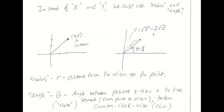Instead of XY, I can give you r-theta pairs. R is radius — the distance from the origin to the point in question. Theta is the angle, the Greek letter theta, between the positive x-axis moving counterclockwise until you reach the line segment from the origin to the point. Counterclockwise is by convention the positive direction in math class, abbreviated CCW. So instead of XY, which are the variables in Cartesian, we use r-theta as the variables in polar coordinates.